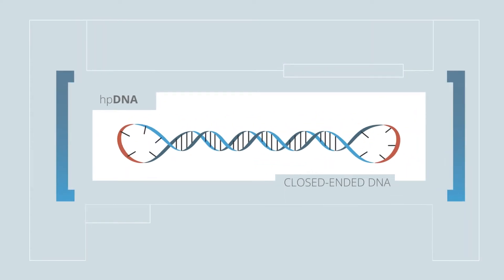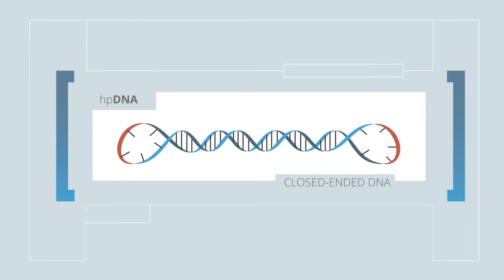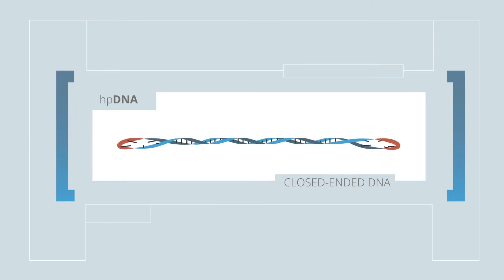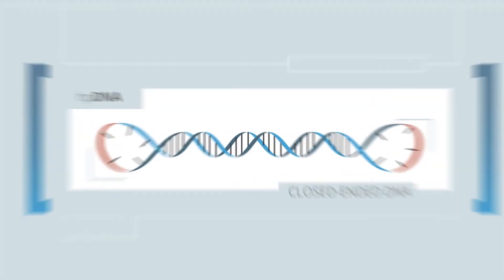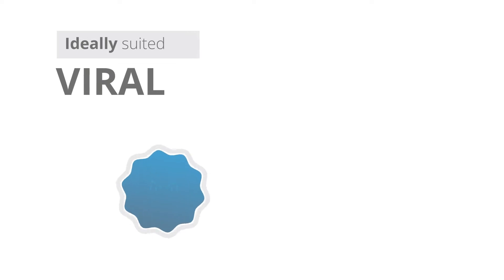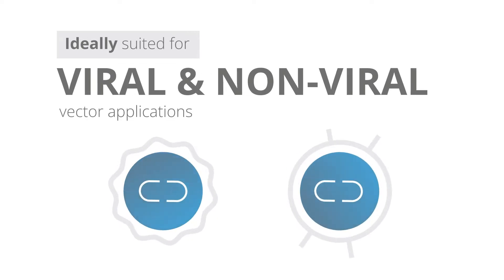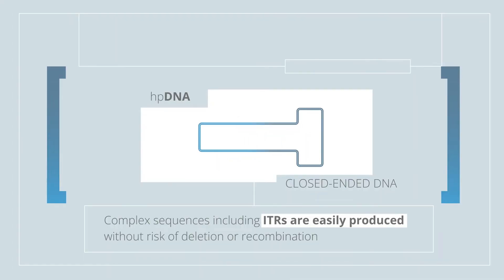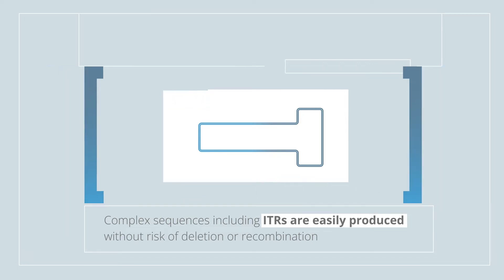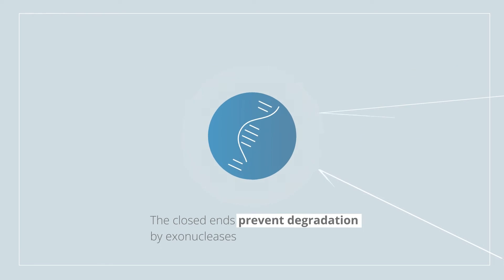HPDNA is a double-stranded linear DNA, covalently closed with single-strand hairpins at the 5' and 3' ends, and is ideally suited for viral and non-viral vector applications. Complex sequences, including ITRs, are easily produced without risk of deletion or recombination, maintaining sequence integrity. The closed ends prevent degradation by exonucleases.